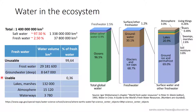This usable water can be found in lakes, marshes, in the atmosphere, and in waterways. As you can imagine, this fresh water that we can use for human activity and human consumption is really precious — one of the most precious things in the world that we have.